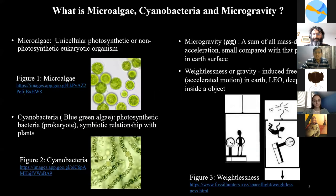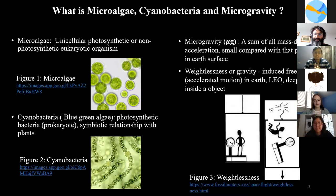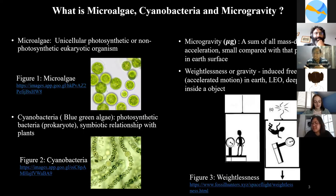Before going too deep, I'd like to explain some basic concepts: what is microalgae, cyanobacteria, and microgravity. Microalgae is a unicellular photosynthetic or non-photosynthetic eukaryotic organism. Cyanobacteria is a bacterium with the capability for photosynthesis, characterized as blue-green algae, and has shown a good symbiotic relationship with plants. Microgravity is when that force of attraction becomes less — we experience weightlessness or gravity-induced freefall.